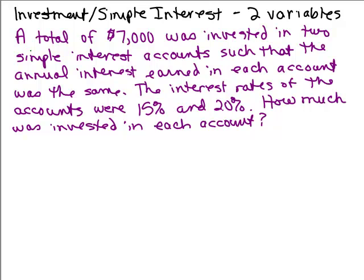So let's start by reading the problem. A total of $7,000 was invested in two simple interest accounts such that the annual interest earned in each account was the same. The interest rates of the accounts were 15% and 20%. How much was invested in each account?